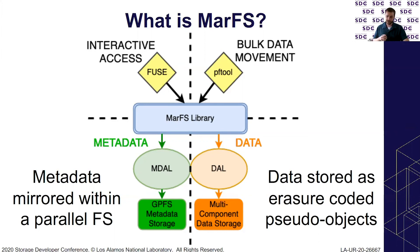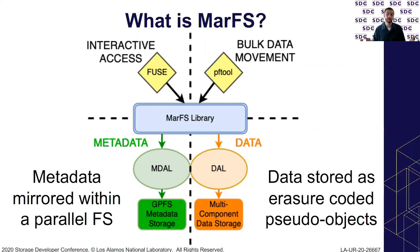On the metadata side, we are literally using an existing POSIX parallel file system — specifically GPFS, or Spectrum Scale as it's now known. Metadata operations are a direct pass-through in most cases. When a user performs an ls on the interactive mount point, that operation is passed through the MDAL to the underlying GPFS file system, which performs a real readdir on the POSIX metadata. This allows us to get POSIX-style permissions essentially for free, alleviating a tremendous amount of complexity.